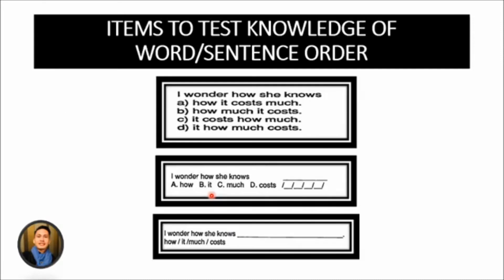Next, an item to test knowledge of word or sentence order. The traditional way is to present the testee with four alternative word orders just like the first example here. Another possibility is to give the testees the four words and ask them to put the words in order just like example number two. And then, they have to arrange it by letters which of the four should come first.